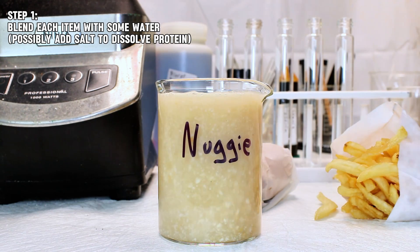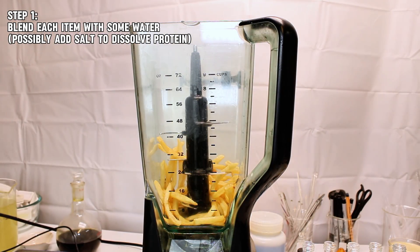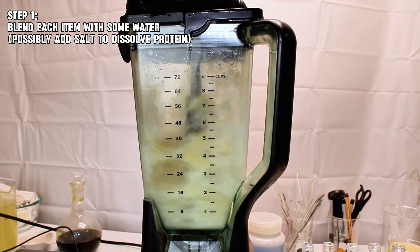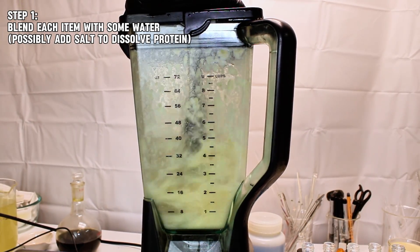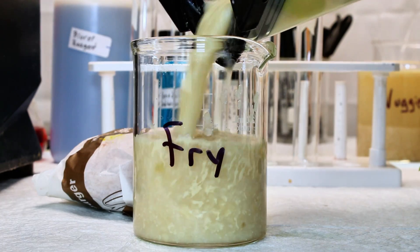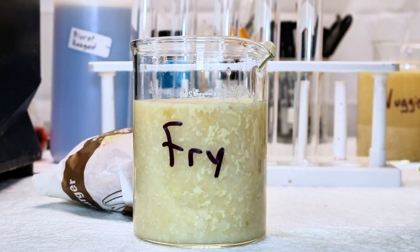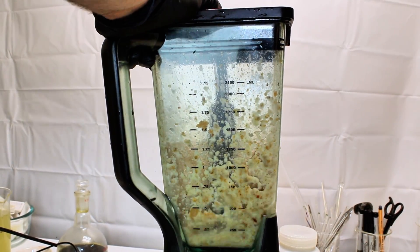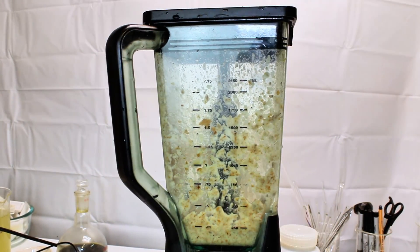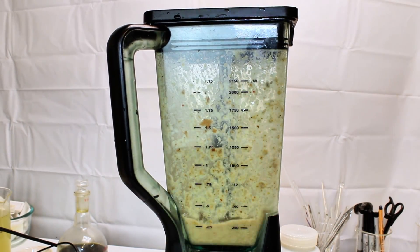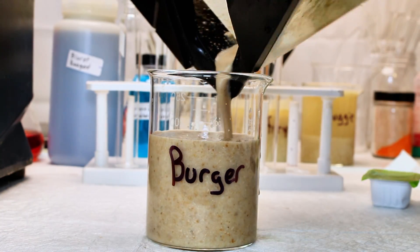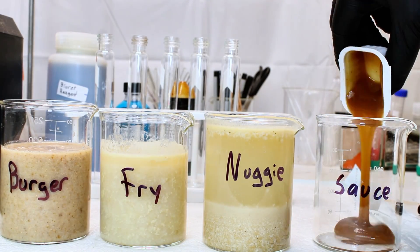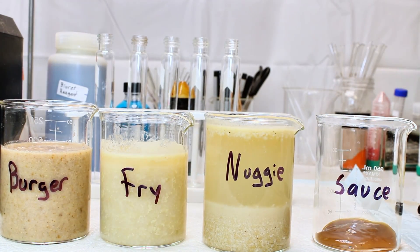I started with the chicken nuggets, to which I added a bit of sodium chloride to help salt in some of the protein, which is a step I skipped when I blended the burger, as I figured they both already probably contained enough salt to suspend a somewhat decent amount of protein. Skipping this step for the burger though might have been a bad idea, and I'm not actually sure. Also, I didn't bother blending the dipping sauce, and instead I just diluted it with some distilled water. In any case, once all the food items had been thoroughly blended and transferred to a few beakers, I decided to start with the Lugol's test for starch.